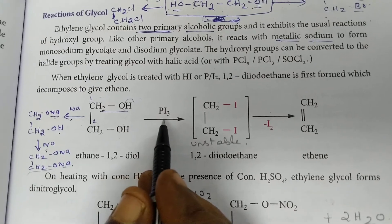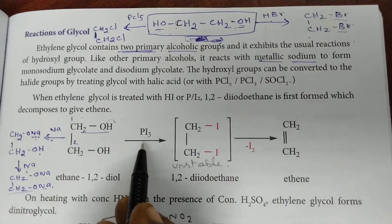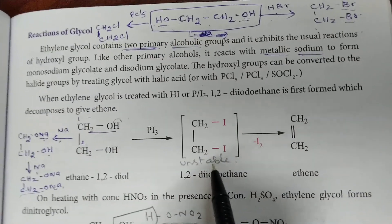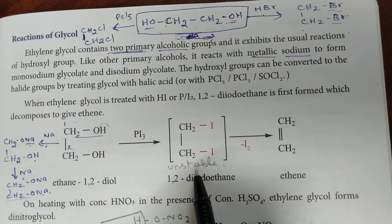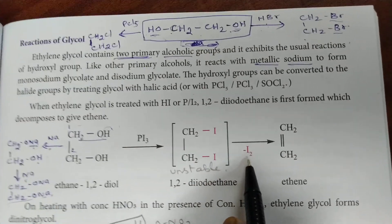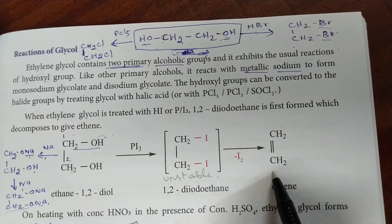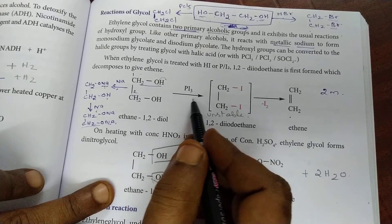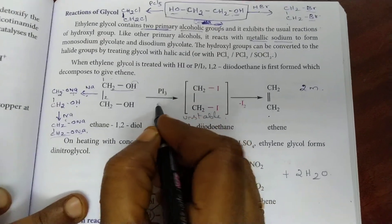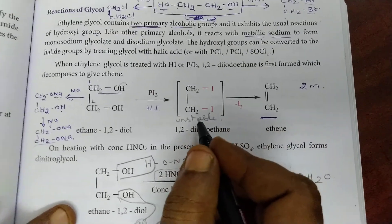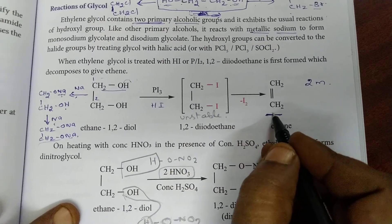When glycol is treated with phosphorus triiodide, initially it gives 1,2-diiodoethane, but this is highly unstable. Therefore, the two iodine atoms are eliminated as an iodine molecule, and it gives an alkene. This is a very important question: what is the reaction between glycol and phosphorus triiodide? With phosphorus triiodide, or hydroiodic acid, it gives an alkene — not a haloalkene. Alkene is the final product.